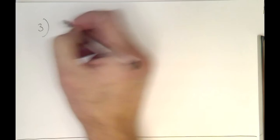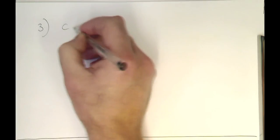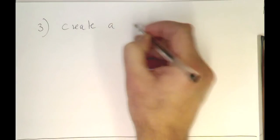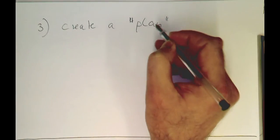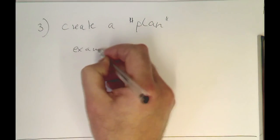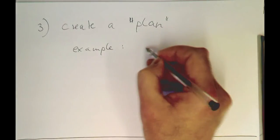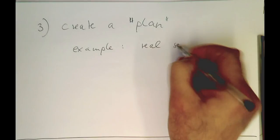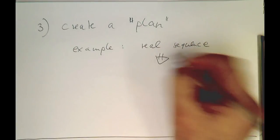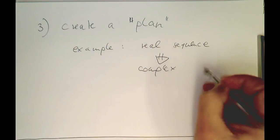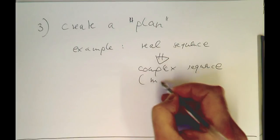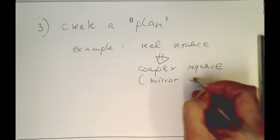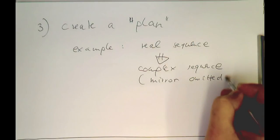So now step number three is, this is a bit unusual or counterintuitive maybe at first sight, create a so-called plan. And this plan really, it means like a plan what to do during the Fourier transform. So as an example, we create a plan which is converting a real sequence into a complex sequence. And so we know that there's also a mirror. And the mirror is automatically omitted in the computation.